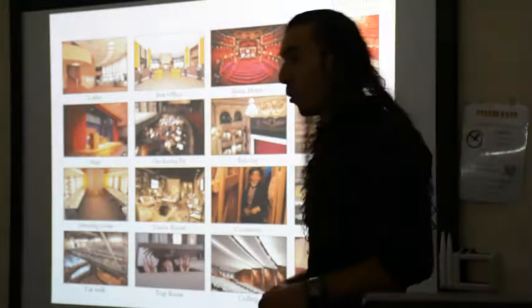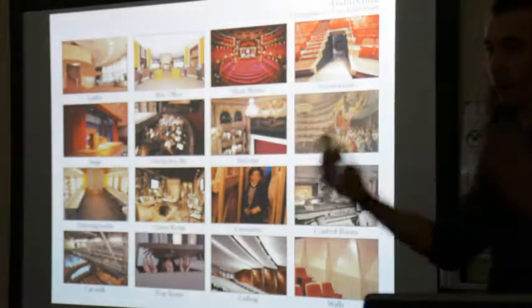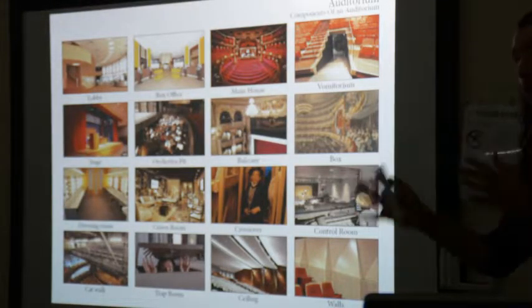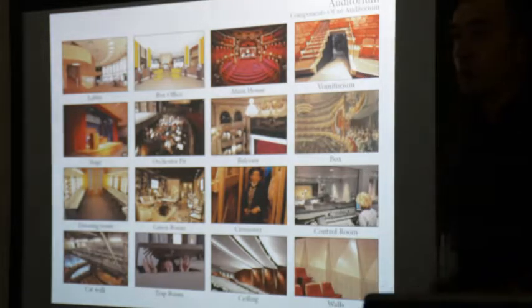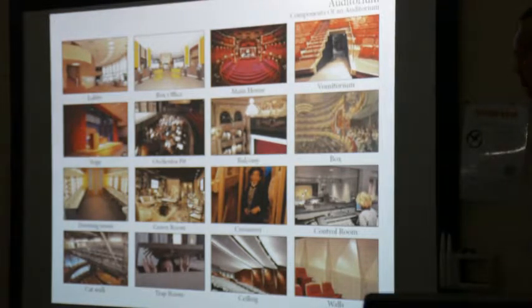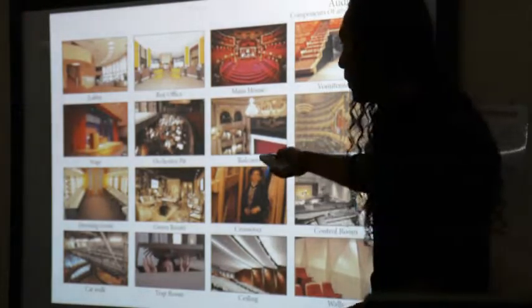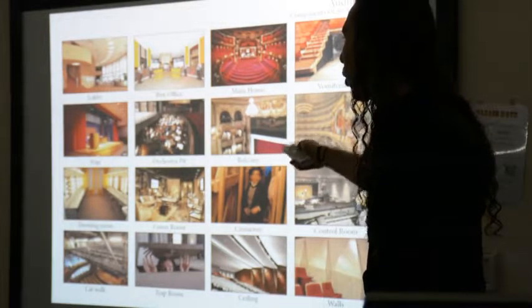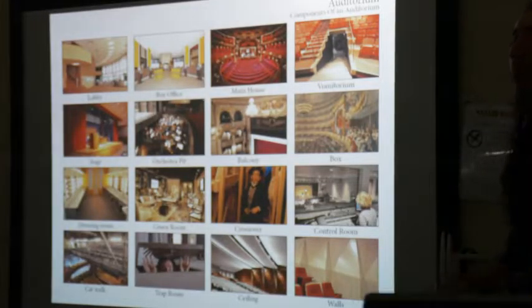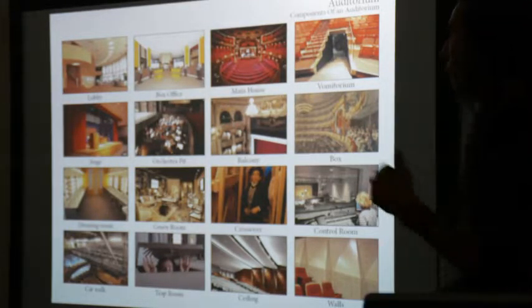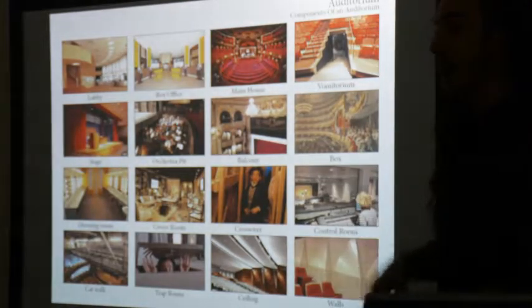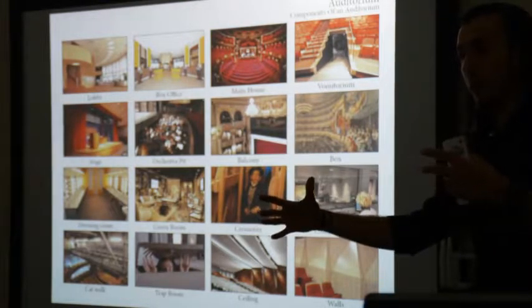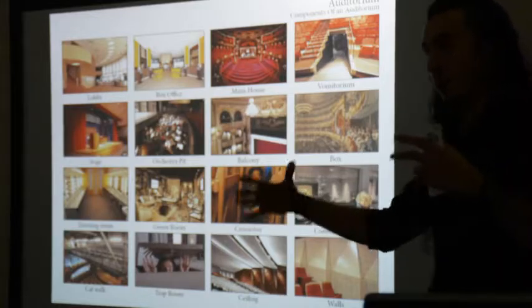These are the components required to create a complete auditorium. You can't just have a wall and call it an auditorium. You need a lobby first — your clients are not going to enter from outside directly into the auditorium, they'll come in through a lobby. Inside the lobby is a box office where you buy or receive tickets. Then you have the main house, which is the main seating area — the public area for the audience.